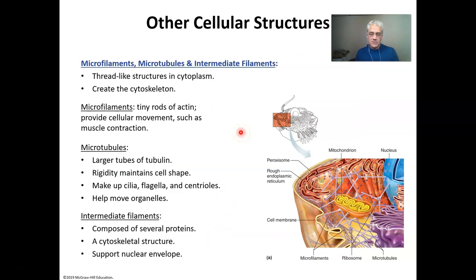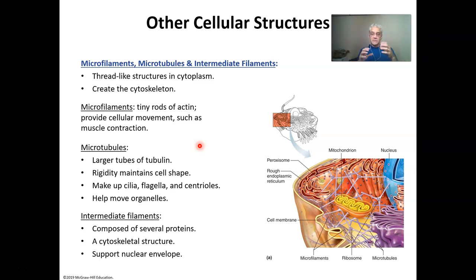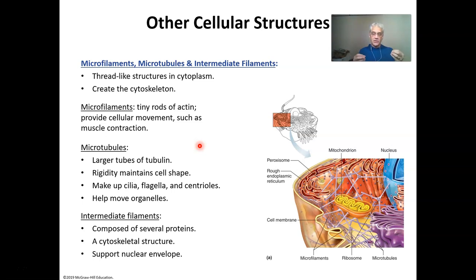Microtubules are part of the skeletal system inside a cell. You also have other structures called microfilaments. Microfilaments and microtubules create the internal cell structure. When we get to Chapter 5, you'll see some cells are flat, some look like cubes, some look like big tall wastebaskets — called columnar cells. Those shapes are maintained by microfilaments and microtubules. In addition, microfilaments and microtubules are involved in the cell reproduction cycle, which is called mitosis — a very critical process to allow DNA to migrate to either end of the new cell and for the cell to split itself.